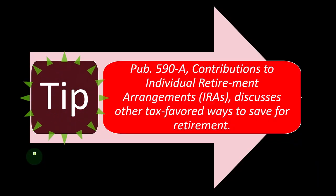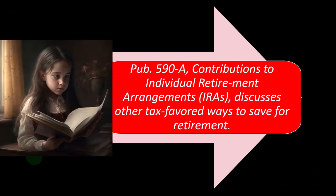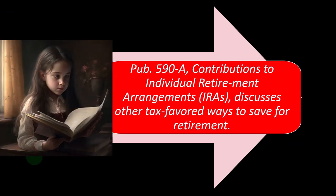Tip: Publication 590-A, which you can find on the IRS website, covers contributions to individual retirement arrangements (IRAs) and discusses other tax-favored ways to save for retirement.